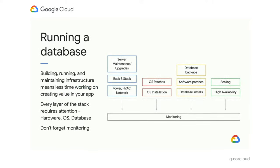When I think about database administration and what it takes to run a database, I think of a diagram with several columns. The left-most column covers server maintenance — racking and stacking servers, HVAC, networking, power — things related to managing a data center or server environment, the hardware itself. In the Cloud, this is taken care of for you. With Cloud SQL instances, we ensure that when you configure a number of vCPUs and some RAM, you get a consistent instance regardless of what's happening with underlying hardware.